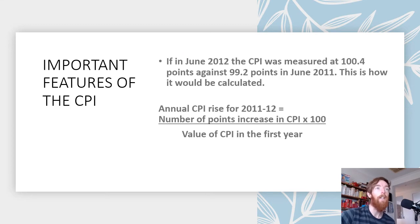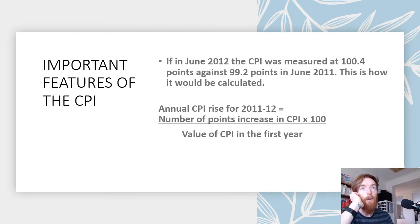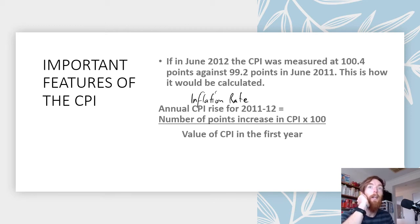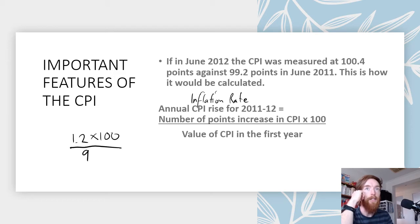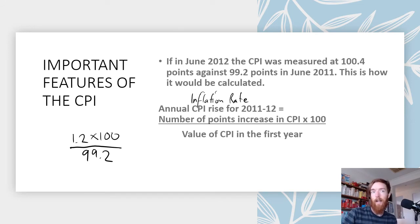To calculate CPI or the inflation rate, we find the annual CPI rise. For example, if in June 2012 the CPI was 100.4 and in June 2011 it was 99.2, the increase in points is 1.2. The formula is: difference in CPI points × 100, divided by the CPI value in the first year. So 1.2 × 100 = 120, divided by 99.2.